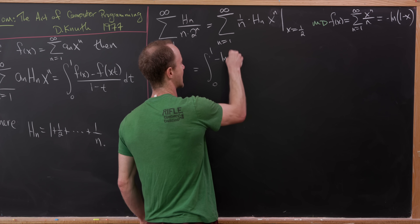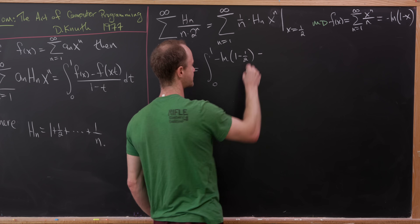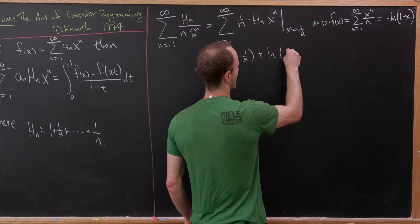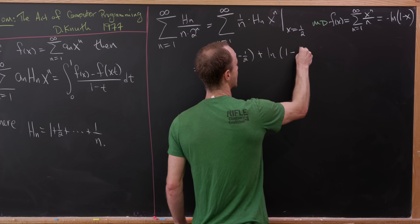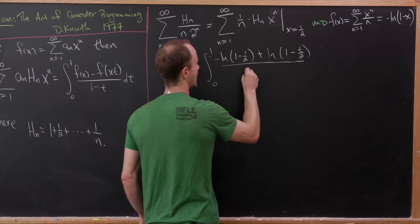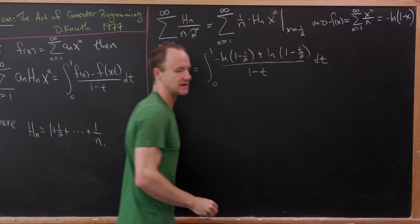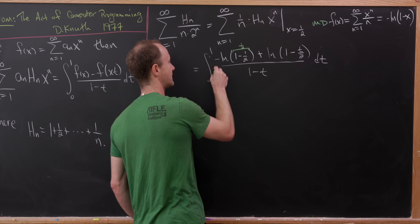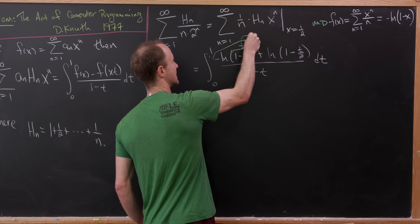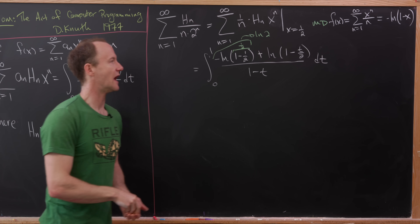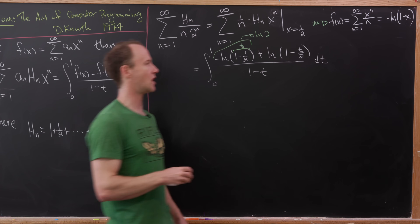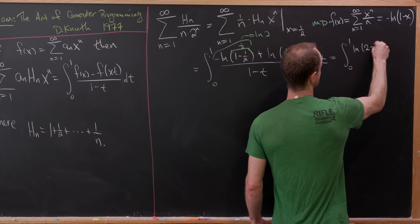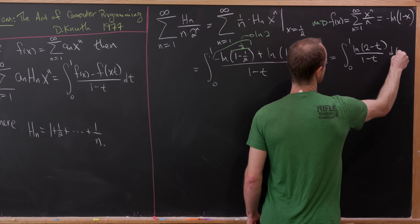Plugging things in, we have minus the natural log of 1 minus 1/2, minus negative — that's just a plus — the natural log of 1 minus (1/2)t, i.e., t/2, all over 1 minus t, dt. Observing that 1 minus 1/2 equals 1/2, we bring in the minus sign to get the natural log of 2, then use logarithm rules to combine the two logs, leaving us with the integral from 0 to 1 of the natural log of (2 minus t) over (1 minus t) dt.